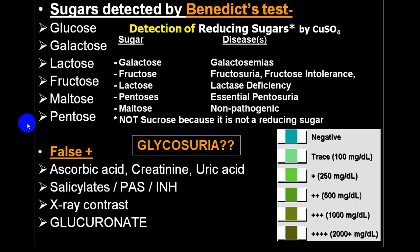Galactose, fructose, lactose, pentose, and maltose are not included in glycosuria per se. False positive results can occur because of ascorbic acid, high levels of creatinine or uric acid, salicylates, para-aminosalicylic acid, isoniazid, and even the presence of contrast media, glucuronates — all of these cause reduction of copper sulfate giving false positive results.